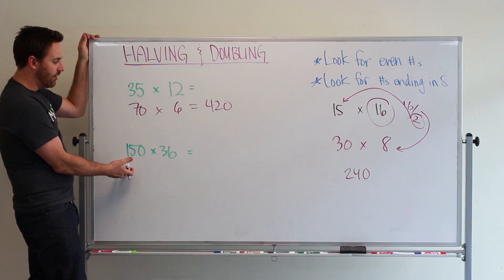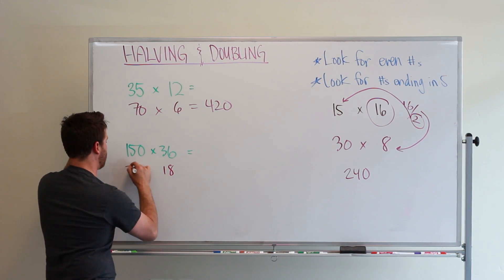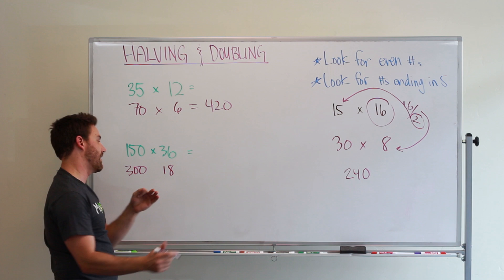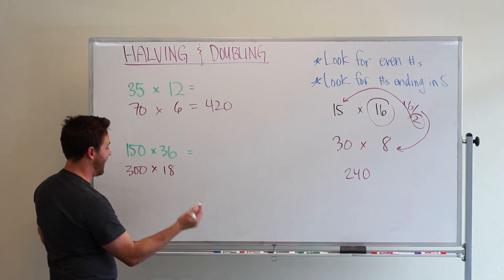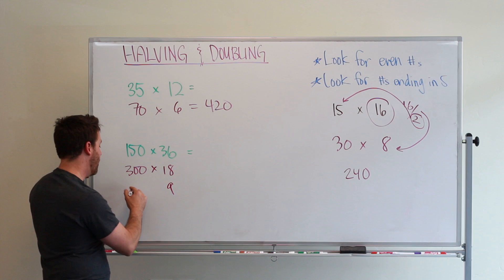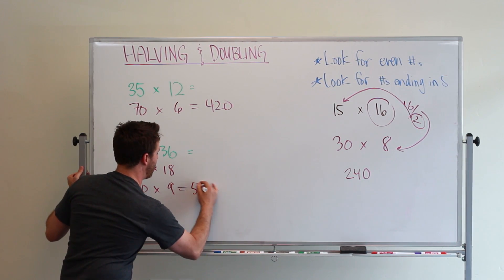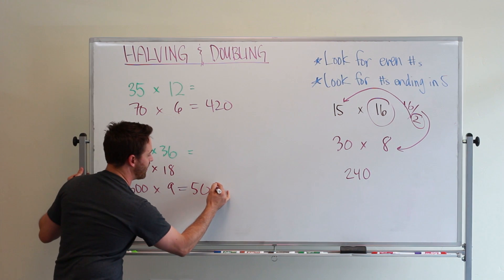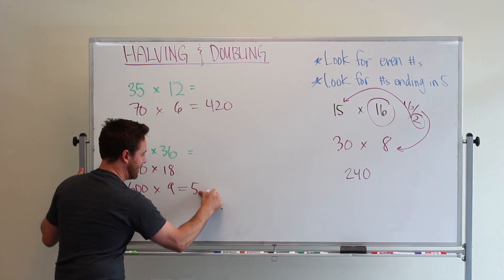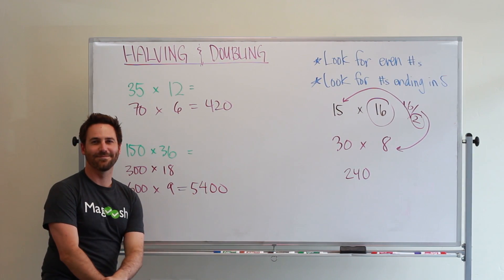Here we can halve our 36 to get 18 and double 150 to get 300. That might be a little easier but not much, so let's halve it again. This becomes 9 and then double 300 to become 600. Now we've got single digit multiplication again: 6 times 9 is 54, add two zeros to get 5400. That's our answer.